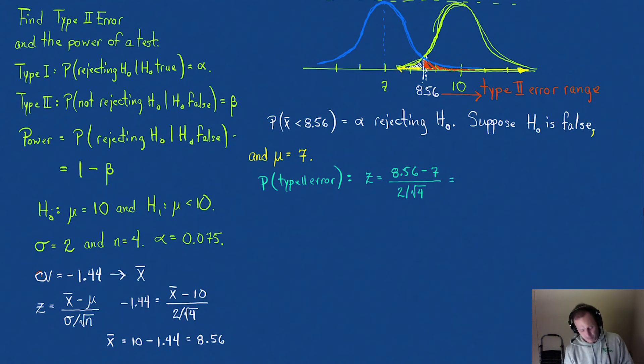The z-score is going to be based on the new mean of 7 and our critical data value of 8.56. So 8.56 minus 7, divided by 2 over the square root of 4. That's 1.56. If we look it up, then the probability of this Type 2 error is equal to 0.0594.